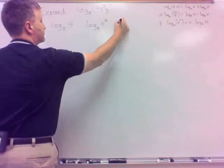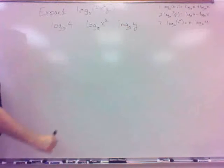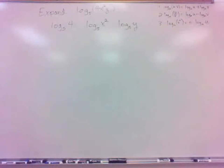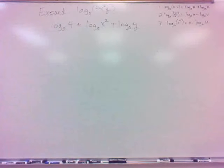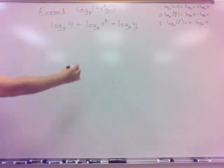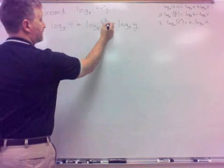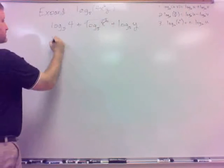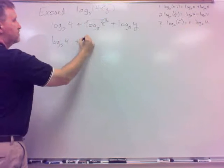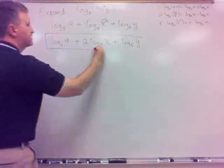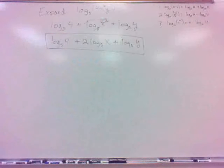What else can I do to expand? I also have X squared, so I can bring out that power. The complete expansion is log base 5 of 4, plus 2 log base 5 of X, plus log base 5 of Y. The power on X squared comes out as a coefficient of 2 in front of that logarithm.